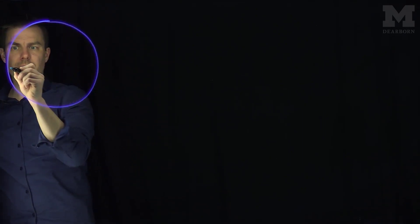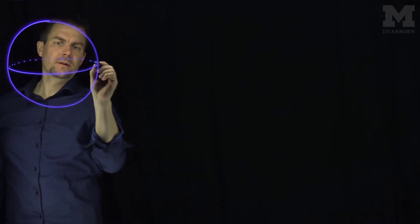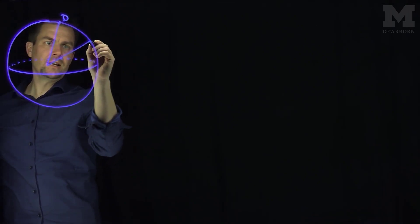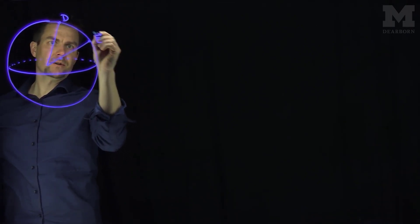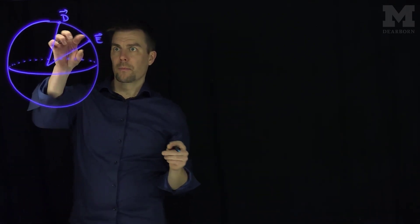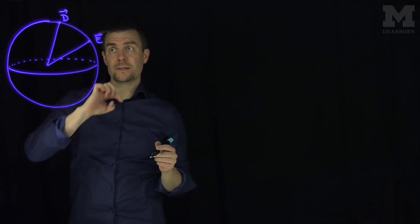Hello students, and this video will prove the spherical law of sines. The context we're going to use is the unit sphere. If I want to find the distance between two points on the unit sphere — point D and point E, represented as vectors D and E — then the shortest path between two points is the arc on the great circle between D and E.